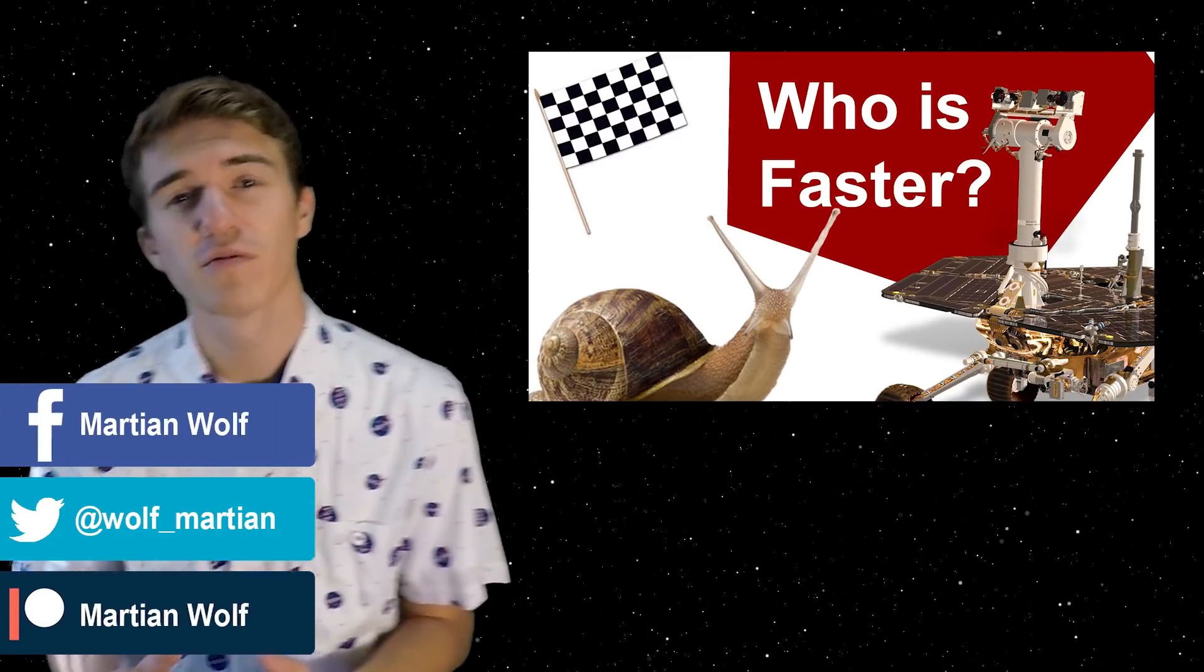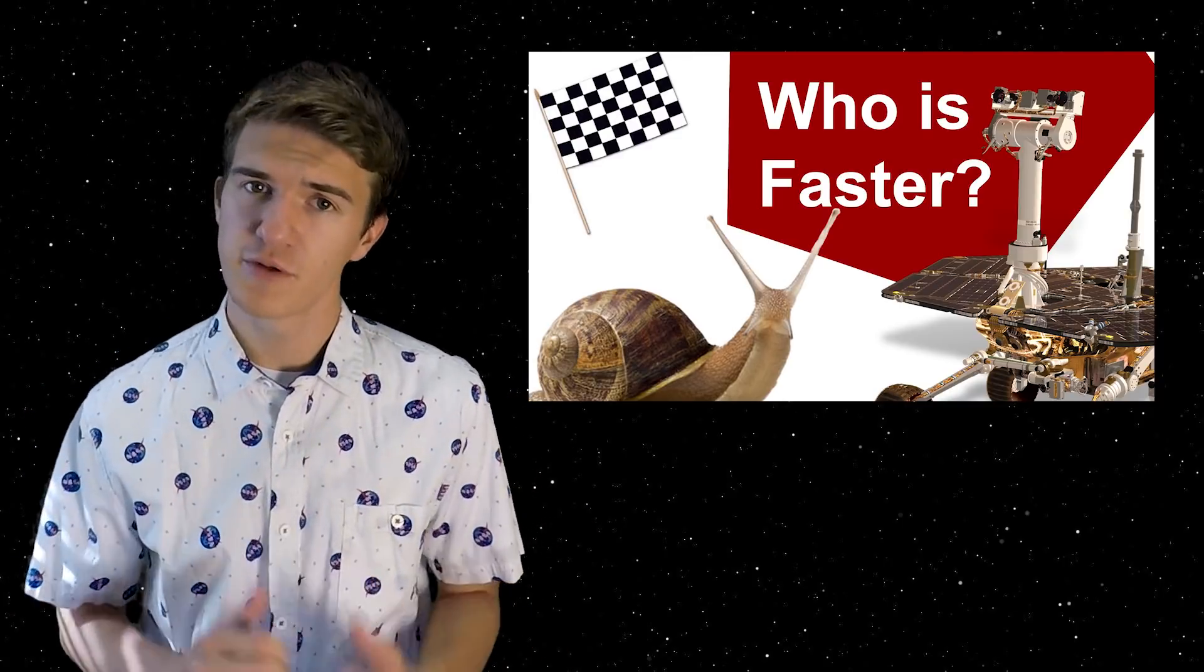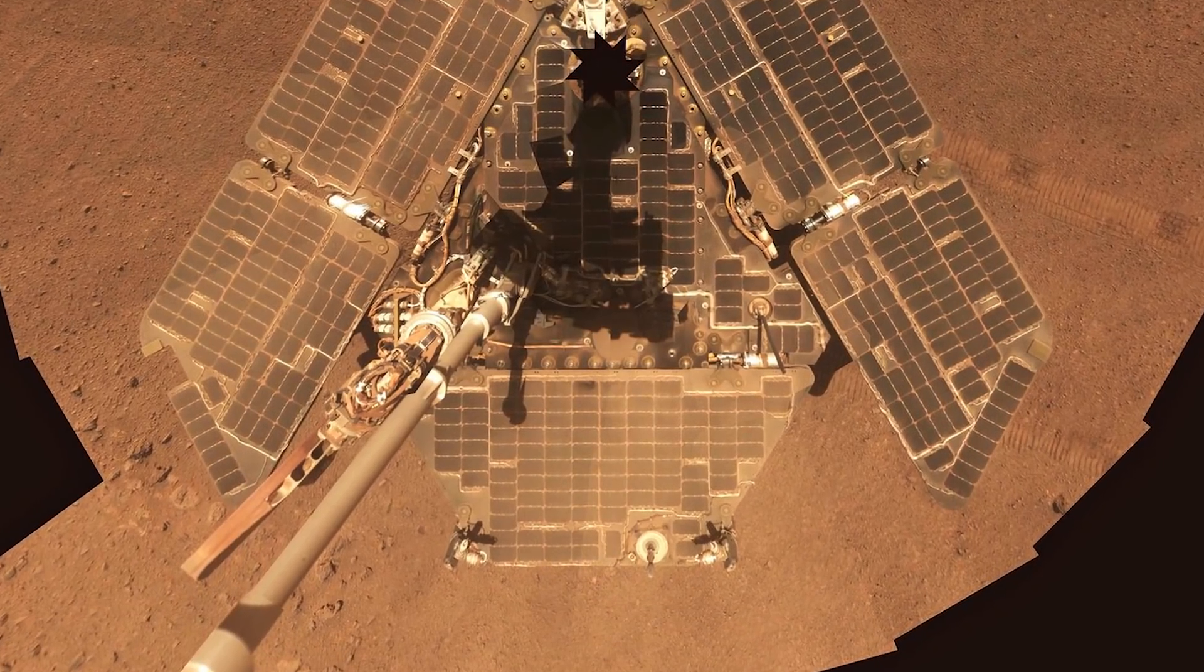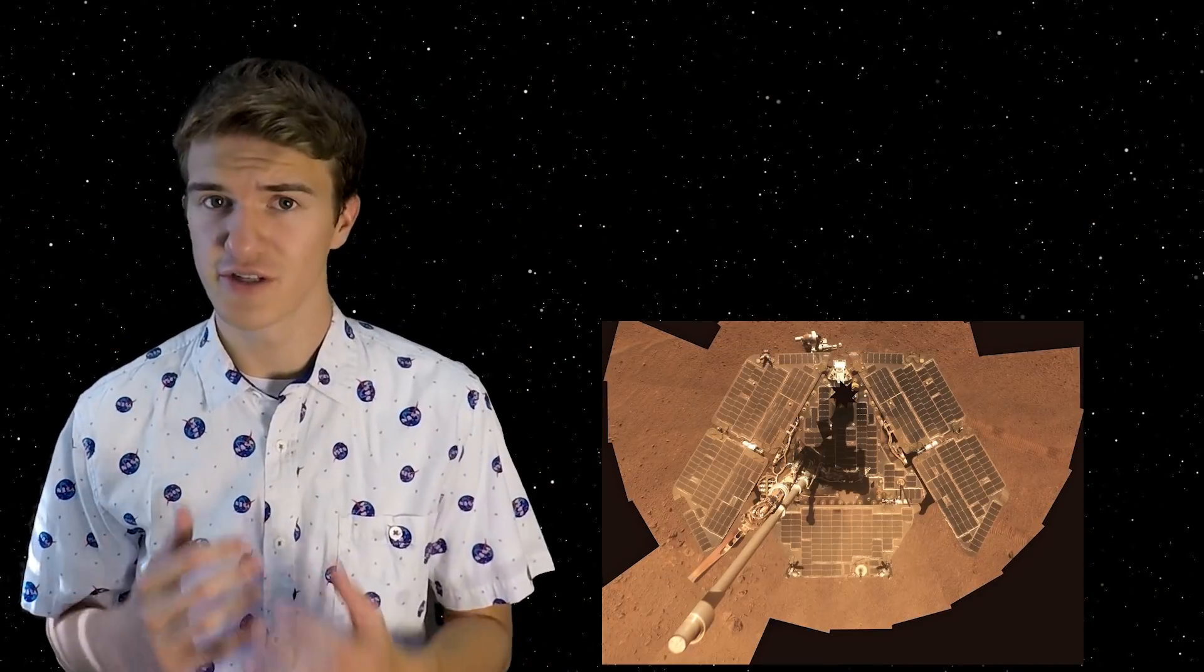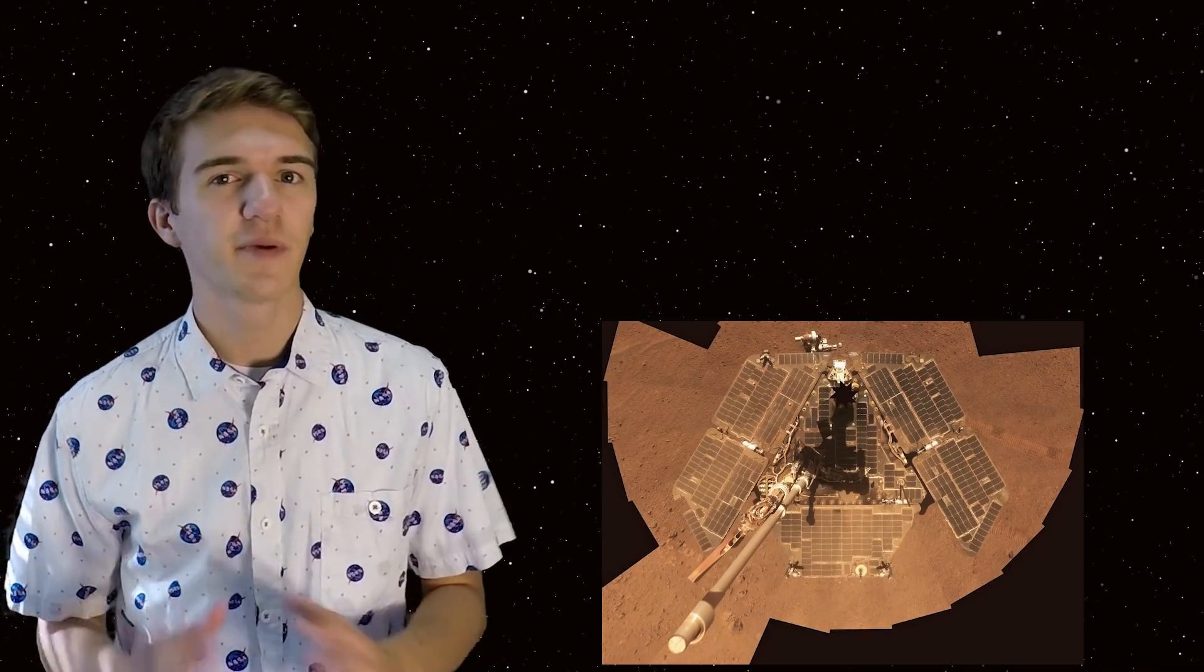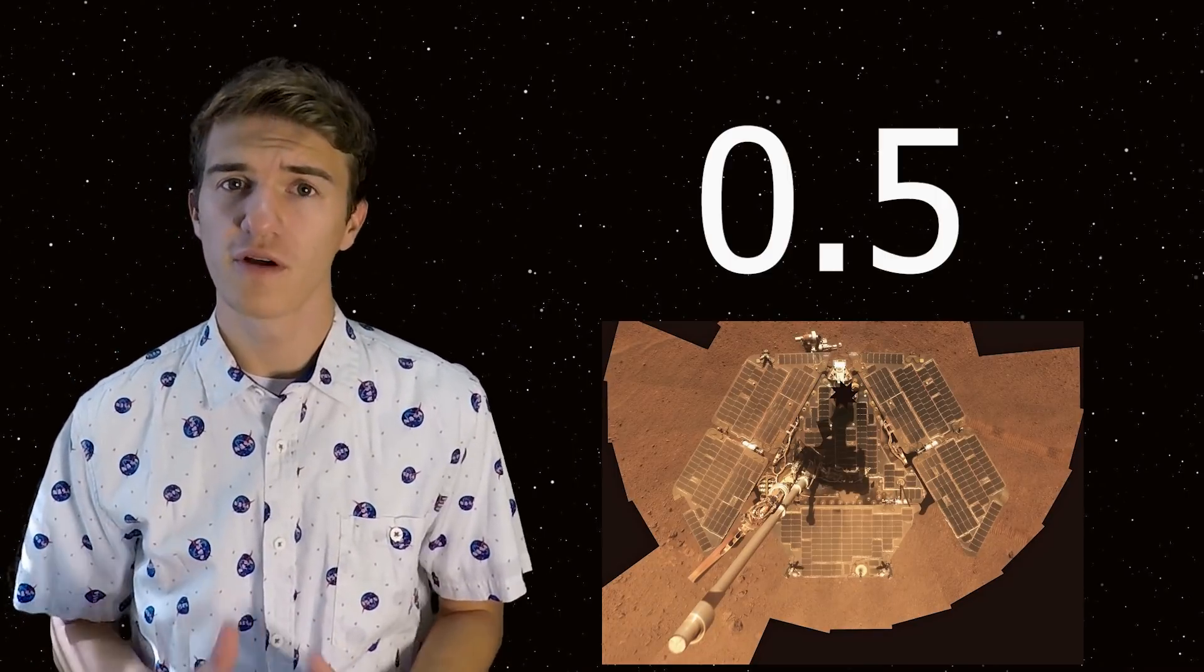To begin, one of the earliest videos on my channel actually steps through the designs of the Spirit and Opportunity rovers. Opportunity, also known as OPI, is solar-powered. Thus, the atmospheric opacity greatly depends on how much energy it can actually take in from the Sun. For example, in its location on Mars, it experiences an opacity of around 0.5.